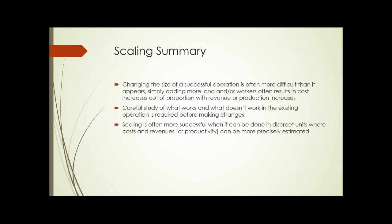Scaling is often more successful when it can be done in discrete units where costs and revenues can be more precisely estimated. For instance, if you're running a successful urban agriculture operation on two acres, you may find scaling easier if you add another two-acre plot. You know what works on your first plot, and it's likely those things will work on the second. The issues you'll encounter are those incremental costs — supervisory personnel, transportation, communications — that you don't have with just one location, and those costs can be relatively easy to identify.